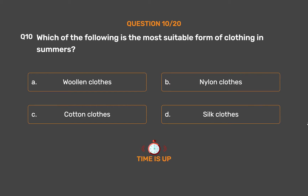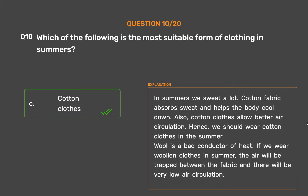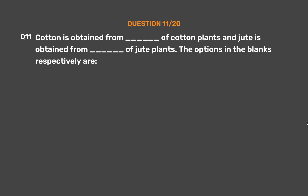The correct answer is Option C, Cotton clothes. In summers we sweat a lot. Cotton fabric absorbs sweat and helps the body cool down. Also, cotton clothes allow better air circulation. Hence, we should wear cotton clothes in summer. Wool is a bad conductor of heat — if we wear woolen clothes in summer, air will be trapped between the fabric and there will be very low air circulation.